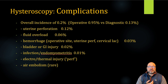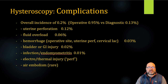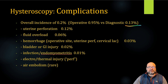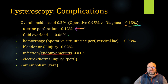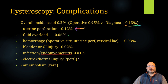As far as complications, like any surgical procedure, there can be issues with hysteroscopy. It is minimally invasive, but we're still introducing instruments into the uterine cavity. The overall incidence of complications is around 0.2%. The diagnostic has a lower incidence of complication, mainly because with just placement of the hysteroscope and not any active resection of tissue, there is a lower risk. The most common complication is uterine perforation, but only 0.12%. Fluid overload is quite rare at 0.06%, and hemorrhage at 0.03%. Bladder and GI injury is quite rare.